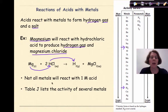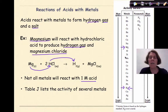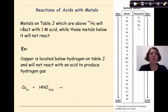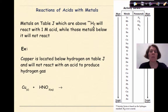Not all metals will react with one molar acid. Table J lists the activity series of several metals. Here's our hydrogen standard — any metal listed above hydrogen will react with an acid, but metals below hydrogen will not react with acids. Metals on Table J which are above the hydrogen standard will react with one molar acid, while those below it will not.